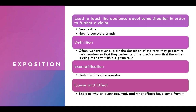Exposition is more nonfiction writing, used to teach the audience about some situation in order to further a claim. Things like a new policy a college or workplace might institute, or how to complete a certain task. Another form of exposition is writing about a definition — writers often have to explain a term precisely so readers can understand it. That ties into exemplification, which is illustrating a term through examples. And then there's cause and effect, which explains why an event occurred and what effects have come from it. All of these expository types of writing are nonfiction in nature.